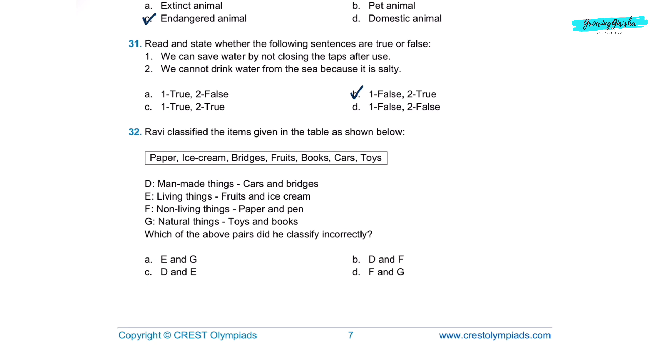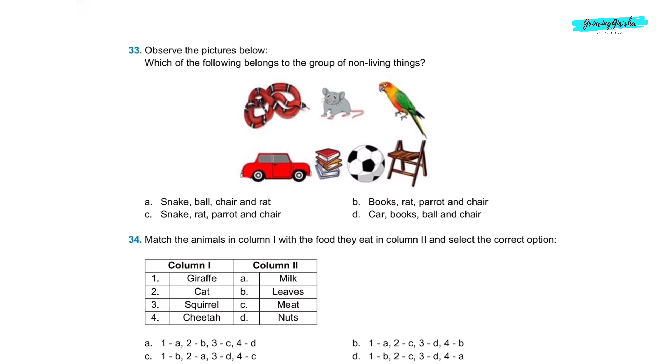Question 32. We classified the items given in the table as shown below. Paper, ice cream, bridges, fruits, books, cars, toys. D, man-made things, cars and bridges. This is correct. E, living things, fruits and ice cream. This is incorrect. F, non-living things, paper and pen. This is correct. G, natural things, toys and books. This is incorrect. Which of the above pairs did he classify incorrectly? Option A, E and G.